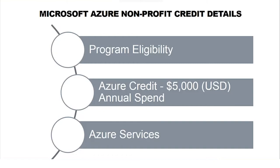You can use the $5,000 credit against anything in the Azure ecosystem — spinning up VMs, backup and recovery, web hosting, SQL DB, whatever it might be. If it's in the Azure platform, you can take advantage of it as a nonprofit. You can also choose where your data is hosted, selecting not just the country but the specific region. For example, the central U.S. region has data centers in locations including Chicago, Iowa, and Texas.